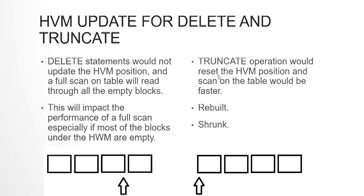For example, say you have a two-million-record table. The HWM would be standing at a block indicating the maximum point where there was ever data. If you then delete 1.5 million records, the HWM still does not move — it remains at the maximum block used when you had 2 million records. So after deleting 1.5 million records, Oracle will still read all the data blocks even if they are empty, leading to very low performance.